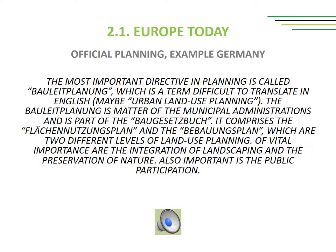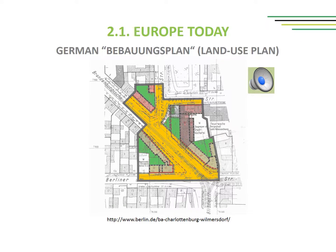The most important directive in German planning is called Bauleitplanung, which is a term difficult to translate into English — maybe 'urban land use planning.' The Bauleitplanung is a matter of the municipal administrations and is part of the Baugesetzbuch. It comprises the Flächennutzungsplan and the Bebauungsplan, which are two different levels of land use planning. Of vital importance are the integration of landscaping, the preservation of nature, and public participation.